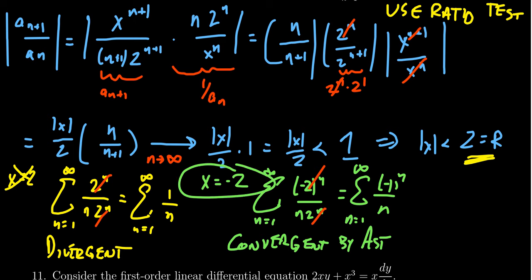As our final answer, our interval of convergence would be negative 2 to 2, where negative 2 is included but positive 2 is not. This is our interval of convergence.